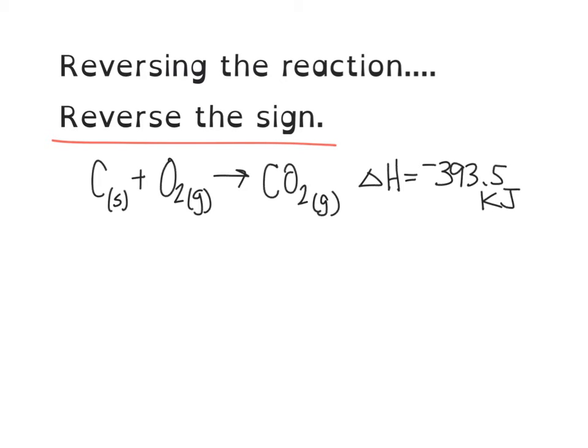So if we are no longer going into the reaction, but rather coming out of the reaction, we have to change the sign. So if we were to rewrite this equation as CO₂ makes C and O₂, our ΔH will now become positive, 393.5 kilojoules.